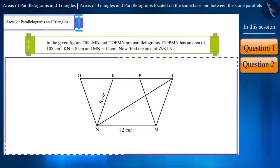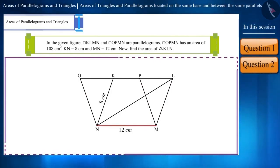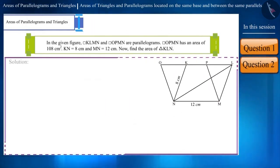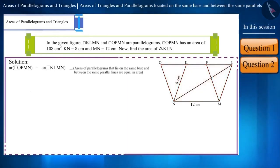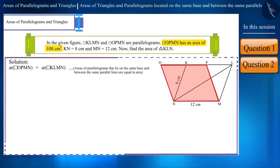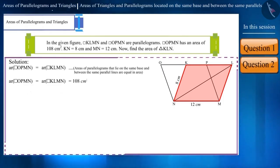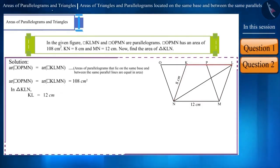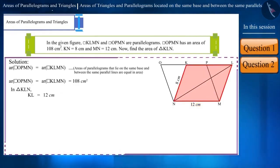In the given figure, parallelogram KLMN and OPMN have the same base — side MN — and they both lie between the same parallel lines OL and MN. Therefore, the area of these two will be equal. The area of parallelogram OPMN is 108 cm², as given to us. Therefore, the area of parallelogram KLMN will also be 108 cm². In triangle KLN, side KL measures 12 cm because its opposite side MN measures 12 cm in parallelogram KLMN.